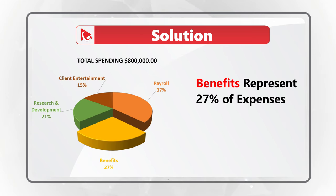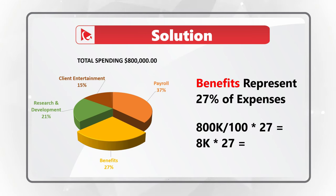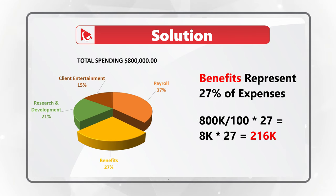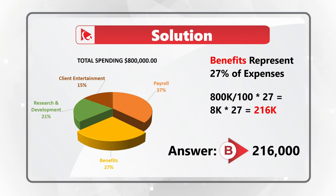The first step to solve it is to look at the chart and identify the benefits segment. Benefits represent 27% of all expenses. To calculate the amount for benefits, we need to divide 800,000 — which is total expense — by 100 and multiply by 27%, which equals 8,000 multiplied by 27, which equals 216,000. So the correct choice here is choice B, $216,000.